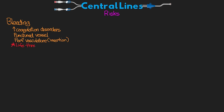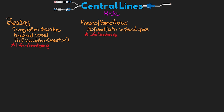Another potential risk is pneumothorax, hemothorax, or a combination — pneumohemothorax. Either air, blood, or both can end up in the pleural space, and once again this can potentially be a life-threatening situation. This is a greater complication with the subclavian insertion. If one of these does develop, this probably means that your patient is also going to end up with a chest tube.